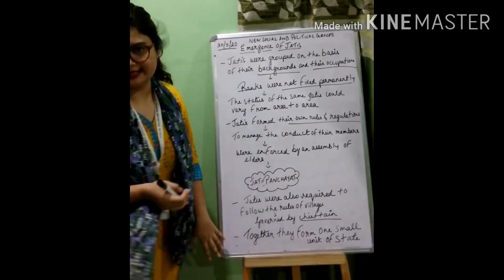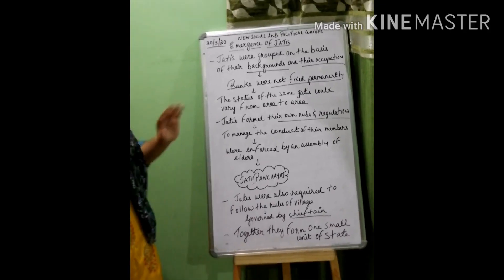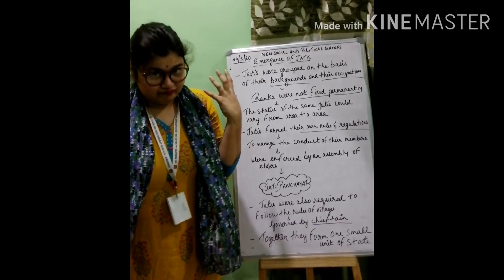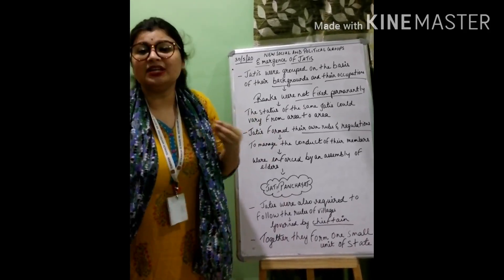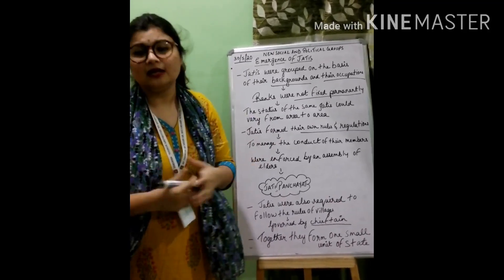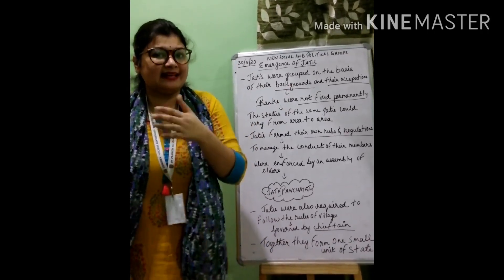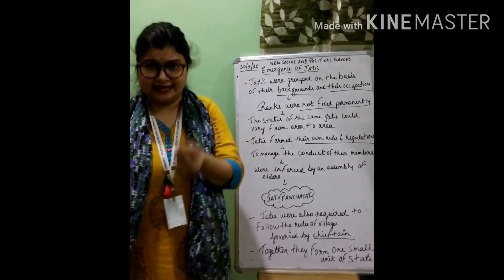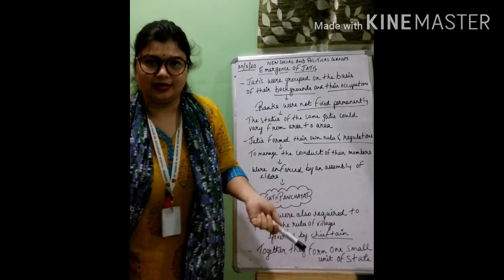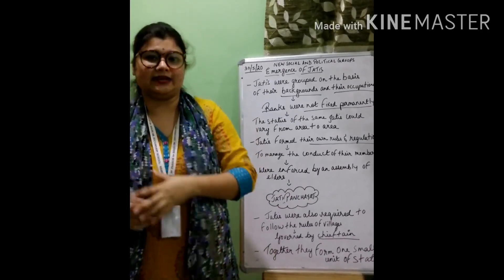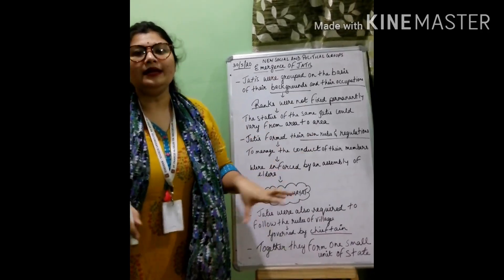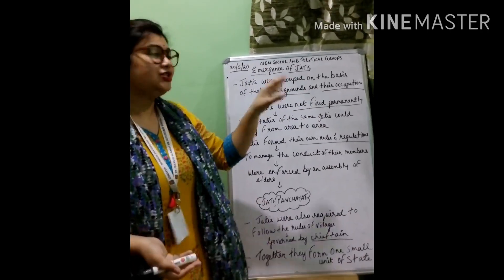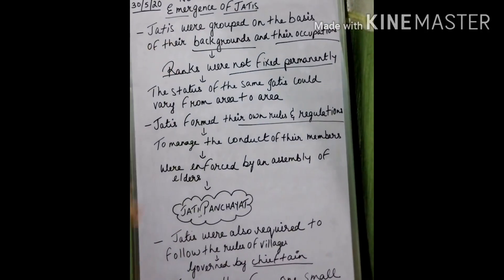To summarize: these forest dwellers who became peasants, because they were changing their environment or habitat, did not fit into the brahmanical ideas or the Vedic tradition — the Varna system. That is why they were further subdivided into jatis or subcastes. These jatis were grouped on the basis of their economic status.